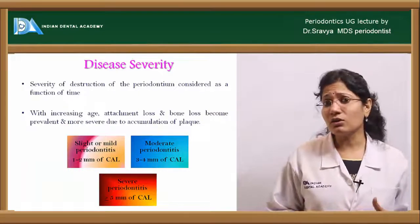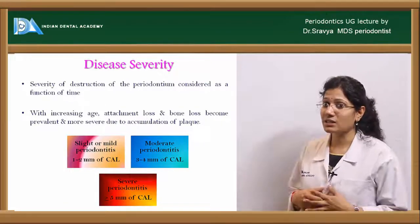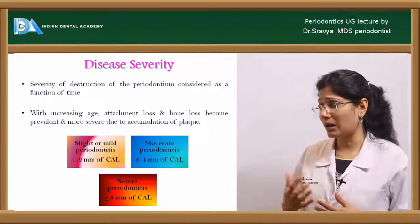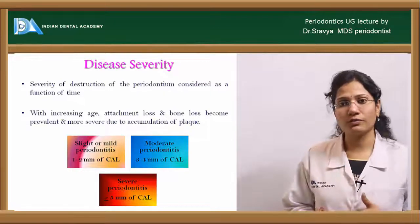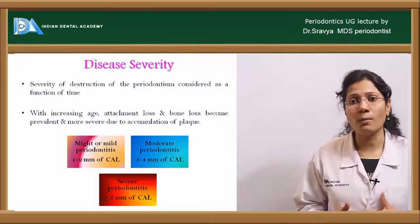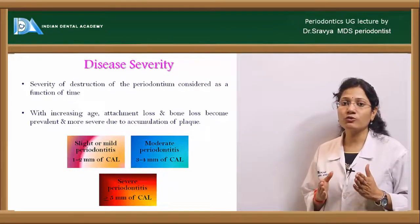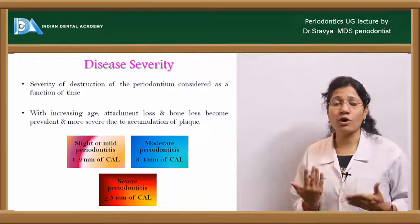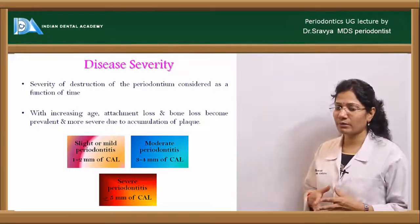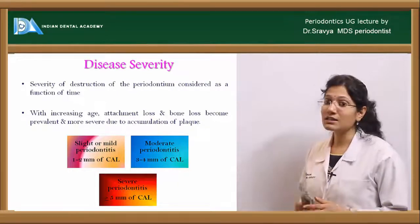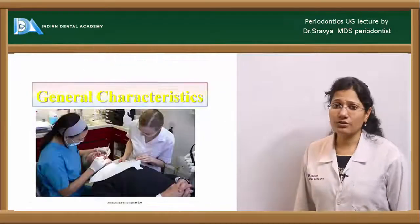Based on disease severity, chronic periodontitis is classified as slight or mild (1–2 mm of clinical attachment loss), moderate (3–4 mm of clinical attachment loss), or severe (greater than or equal to 5 mm of clinical attachment loss). Attachment loss and bone loss become more prevalent and severe with age due to accumulation of deposits.